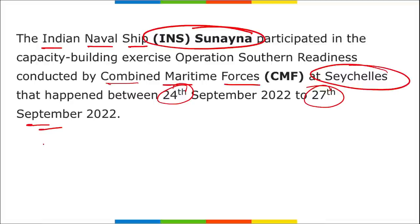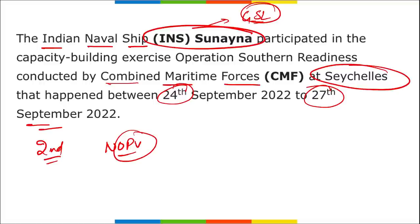INS Sunayana is the second Saryu-class Naval Offshore Patrol Vessel (NOPV), commissioned by Vice Admiral Satish Soni, Flag Officer Commanding-in-Chief for the Southern Naval Command at Kochi in October 2013. It was developed by Goa Shipyard Limited and has a speed of around 25 knots.